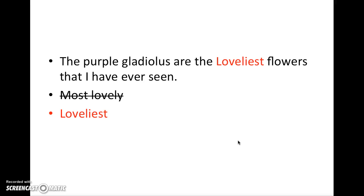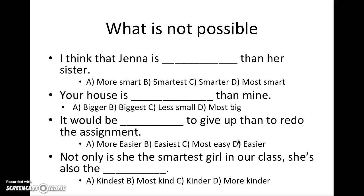Now we're going to move on to another exercise. You're going to see four sentences on the screen, and you'll have the opportunity to give an answer. Write your answers in your notes, and then at the end we'll go over all four of them together. Here's number one: 'I think that Jenna is blank than her sister.' Is it: (a) more smart, (b) smartest, (c) smarter, or (d) most smart?